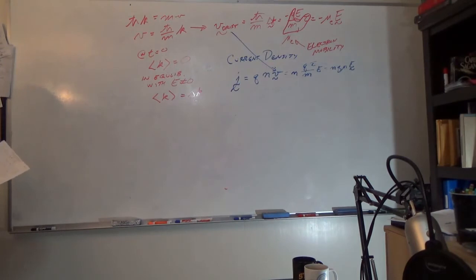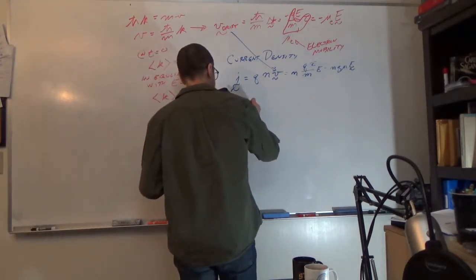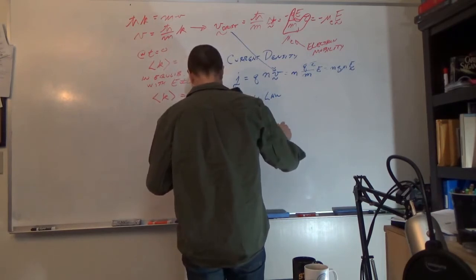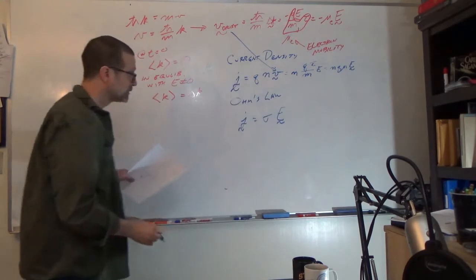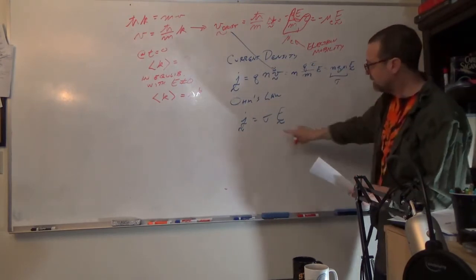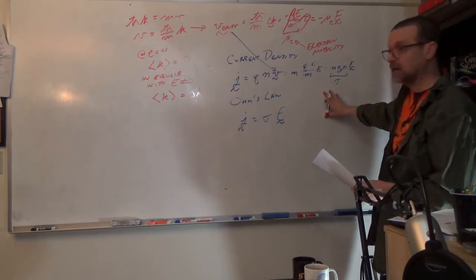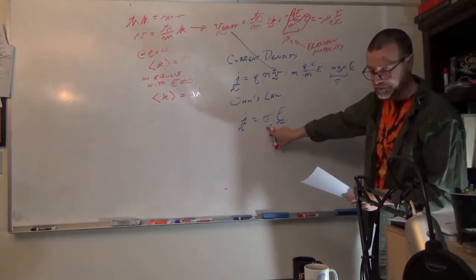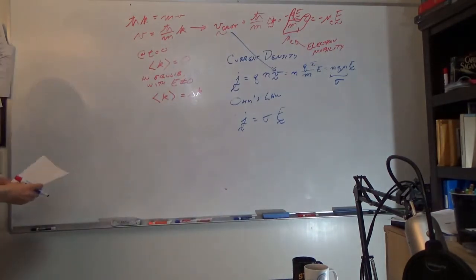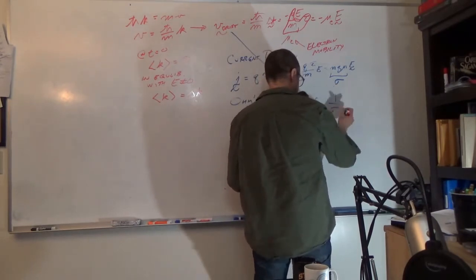Substituting in the drift velocity, we can say that the current density is n q tau over m times E, or n q mu times E. We also know that Ohm's law tells us the current density equals the electrical conductivity sigma times the electric field. This means n q mu is our electrical conductivity — yes, this should be a second-rank tensor, but for talking about magnitudes and direct relationships, we can talk about this being our conductivity. And our resistivity is 1 over the conductivity.